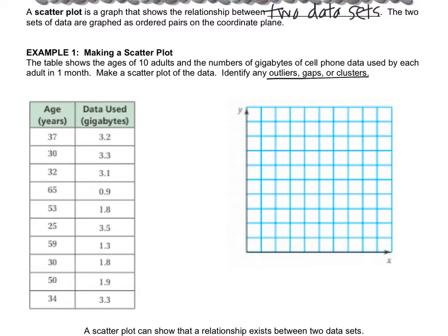My lowest age is 25 and my oldest is 65. For the x-axis I can use a break — that little squiggle — to show there's no data lower than 25. So 25 is my lowest and I'll go by 5s: 30, 35, and so on.